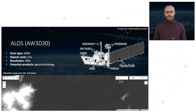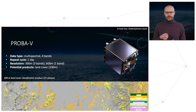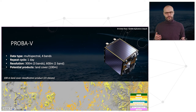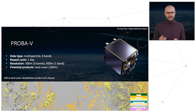Similarly, ALOS or AW3D30 is a topographical mission with similar characteristics. Another multispectral mission used to derive a land cover product is called PROBA, with a repeat cycle of one day and a resolution of 300 to 600 meters. The land cover product has been derived using that sensor.